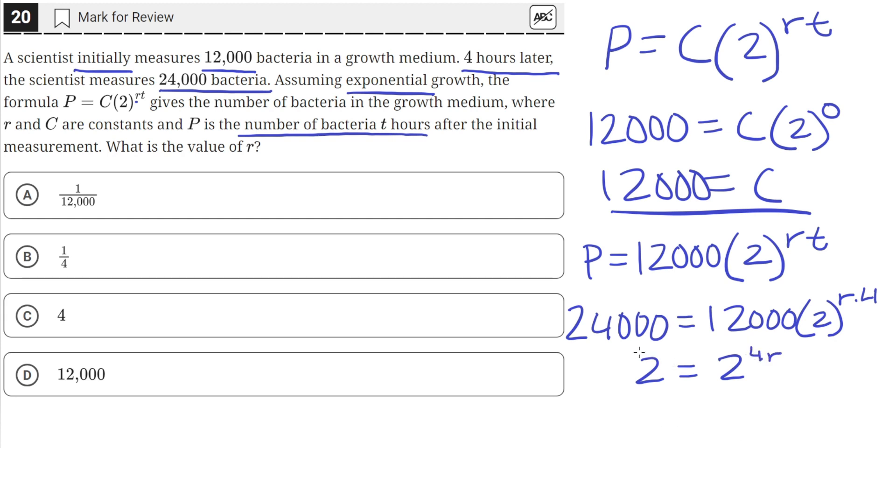Here this two is raised to an exponent of one. Since the bases are the same, we need to set the exponents equal to each other to satisfy this equation. To find the value of R, we need to solve: one equals 4R. We can divide both sides by four, and we'll get that R equals one-fourth. So the value of R is one-fourth, which is answer choice B.